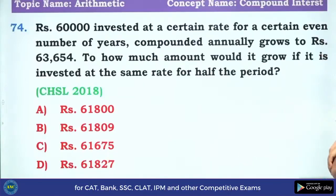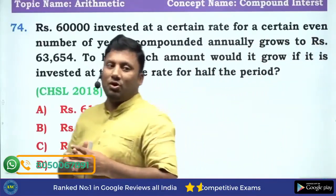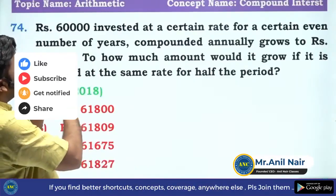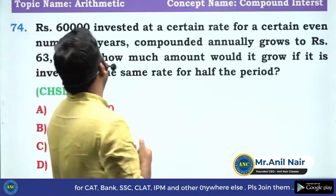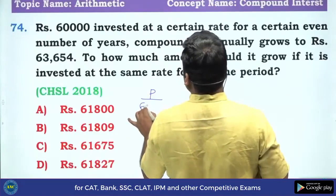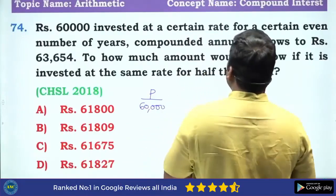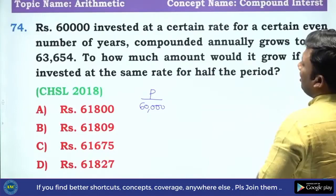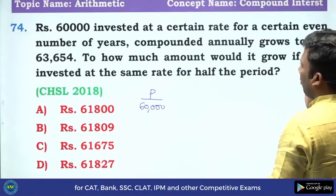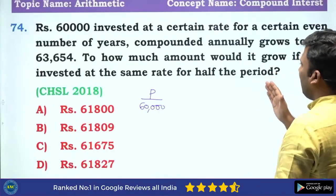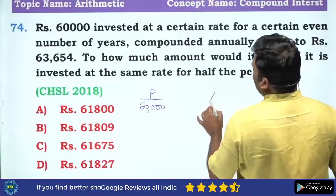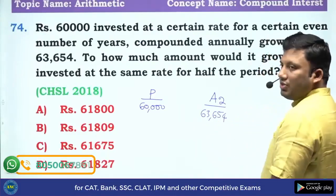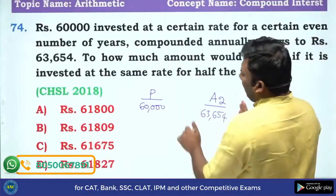Now let us solve the next question. Read the question — just because the length of the question is more does not mean the calculation will be intensive. Be patient, read the question slowly, and somewhere you will find the hint. 60,000 is invested at a certain rate for a certain number of years compounded annually and grows to 63,654. To how much will it grow if invested at the same rate for half the period? If the total period gives A2 = 63,654, we need A1 for half the period.